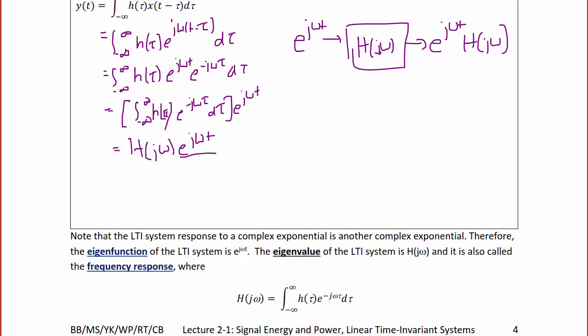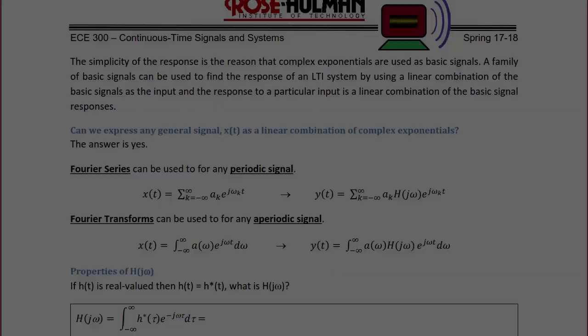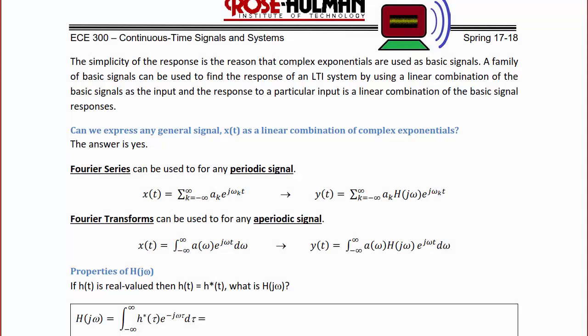e^(jωt) is the eigenfunction of the LTI system and H(jω) is the eigenvalue, also called the frequency response, where H(jω) = ∫_{-∞}^{∞} h(τ) e^(−jωτ) dτ. The simplicity of the response is the reason that complex exponentials are used as basic signals. A family of basic signals can be used to find the response of an LTI system using a linear combination, and the response to a particular input is a linear combination of the basic signal responses.